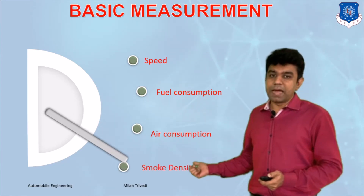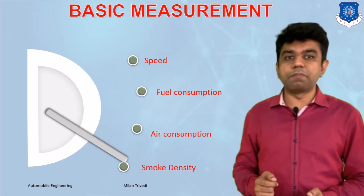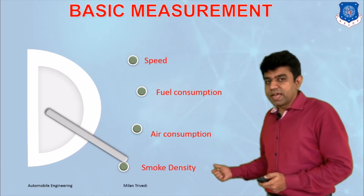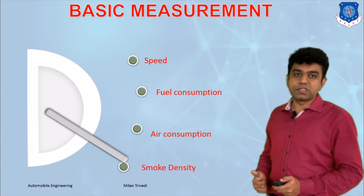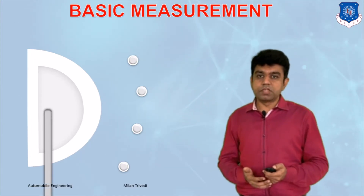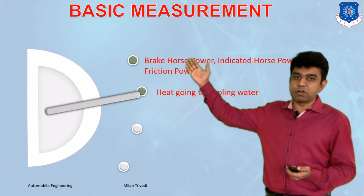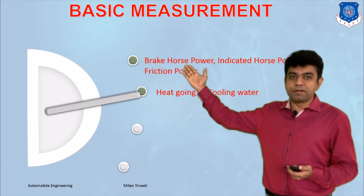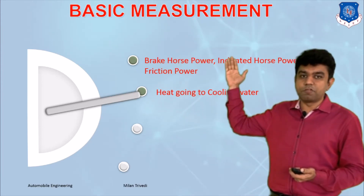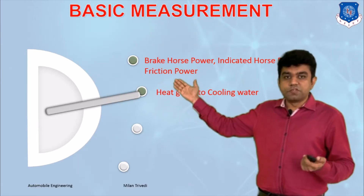The fourth parameter is smoke density, which can be measured using a smoke meter to get the value of smoke density present in the exhaust gas. Other parameters include brake horsepower, indicated horsepower, and friction power. For brake horsepower, we use a dynamometer. Indicated power can be measured with a formula, and friction power can be obtained using the Williams line method.